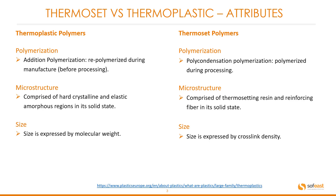In its solid state, thermoplastic is comprised of hard crystalline and elastic amorphous regions. Thermoset is comprised of thermosetting resin and reinforced fibre in its solid state. Thermoplastic size is expressed by molecular weight, whereas thermoset size is expressed by cross-link density.